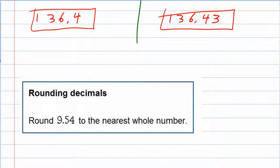In our example here, we're asked to round 9.54 to the nearest whole number. We're being asked to round to the whole number. The 9 is the whole number. So we're pretty much asked to get rid of those decimals.